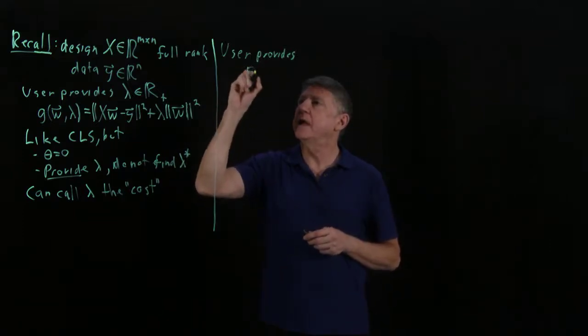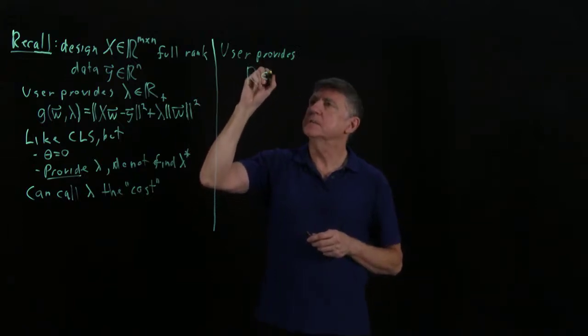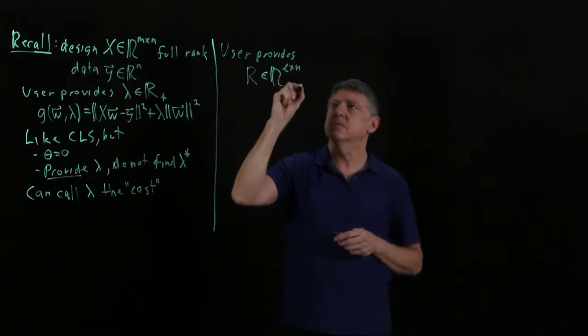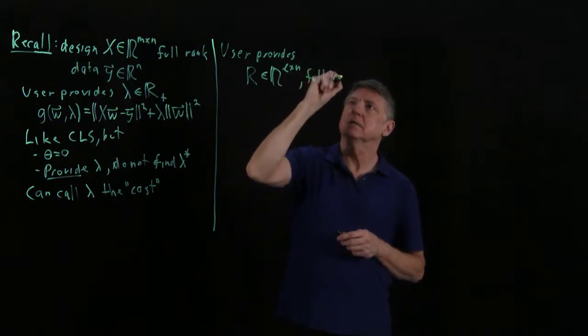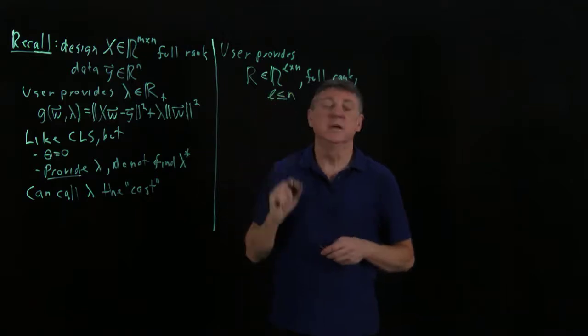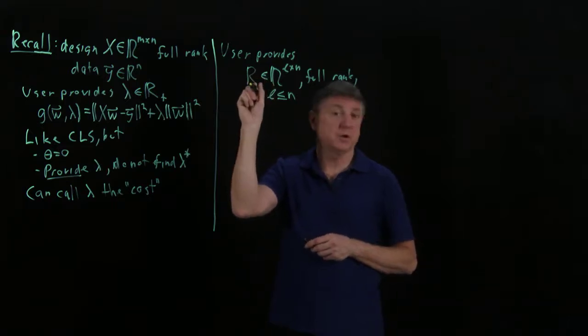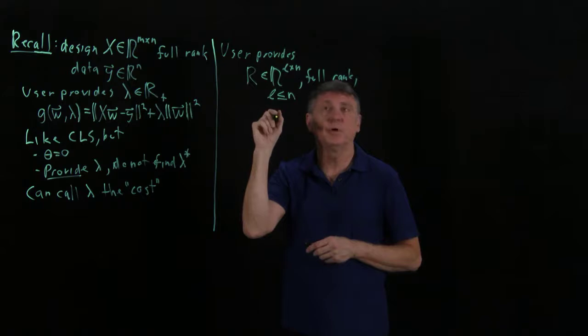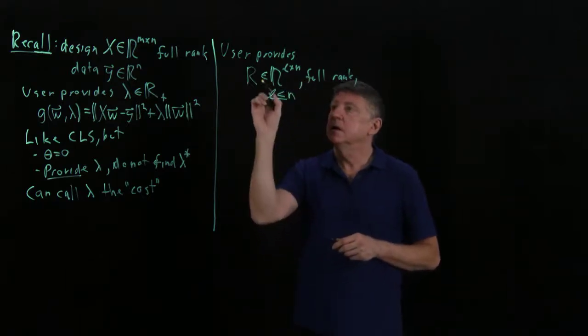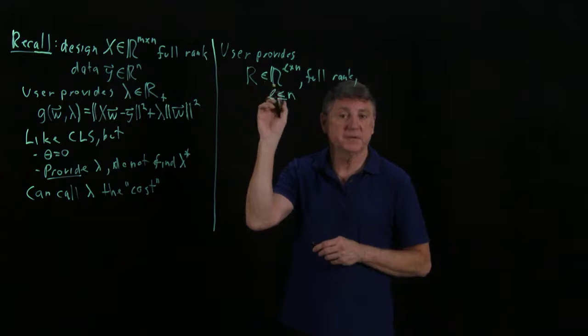One is a regularization matrix R, which has l rows and n columns, is full rank, with l less than or equal to n. R can be a square matrix, a one-form, or anywhere in between, provided it's full rank. It's typical but not required that R is upper triangular.